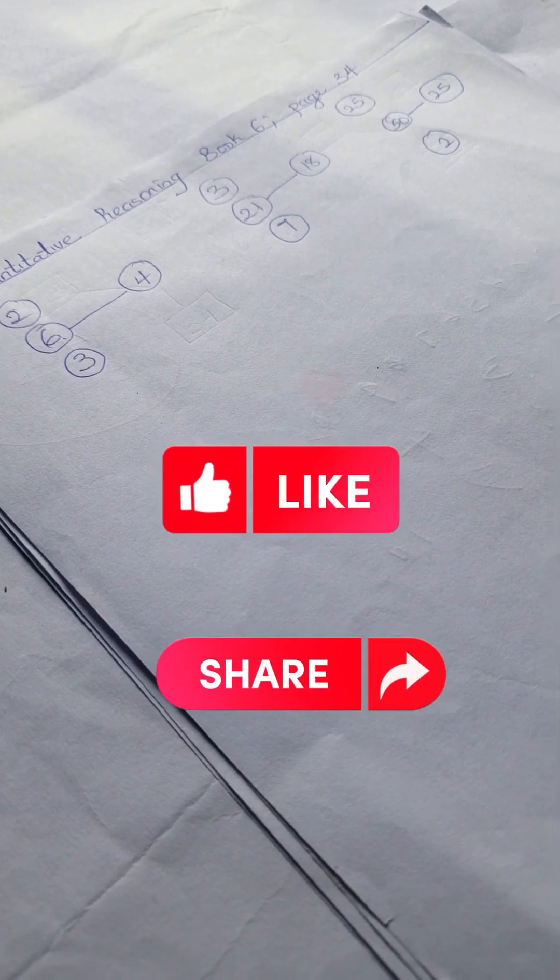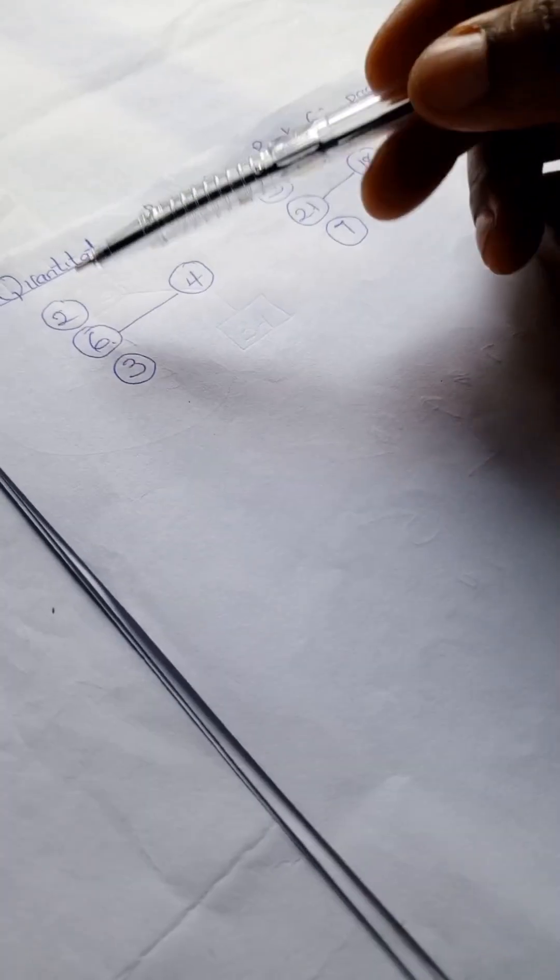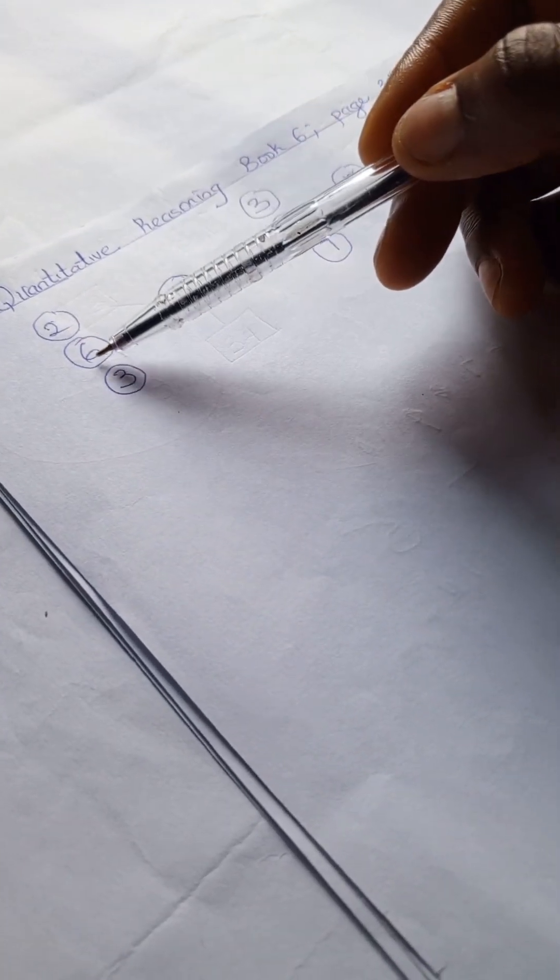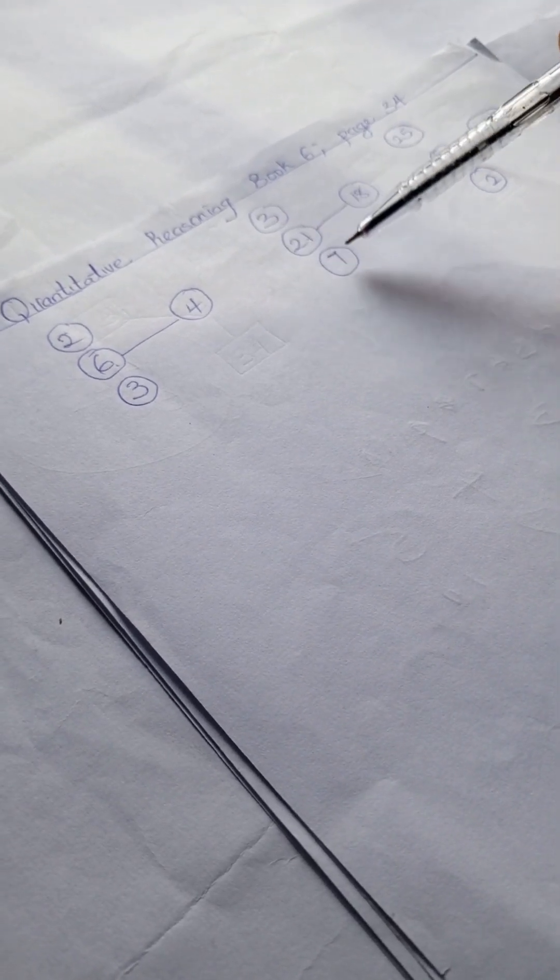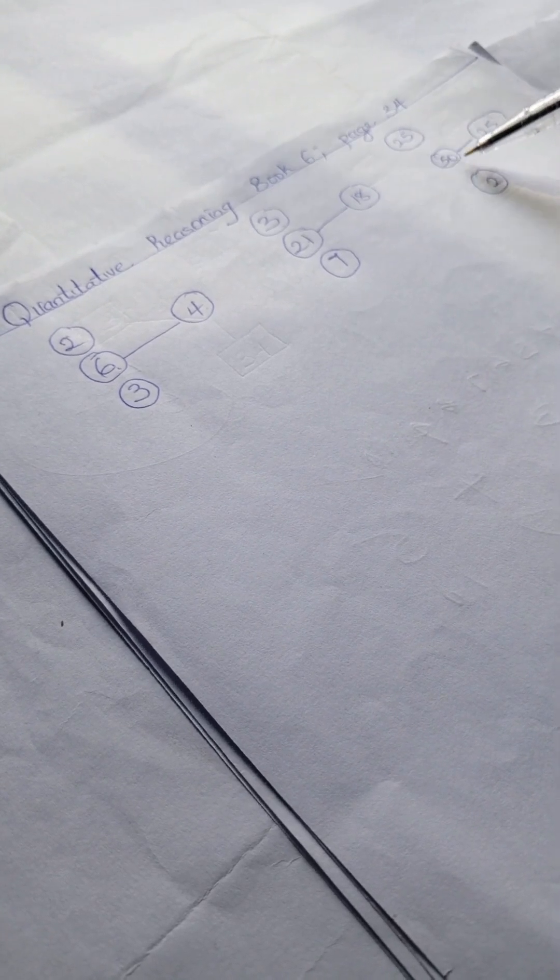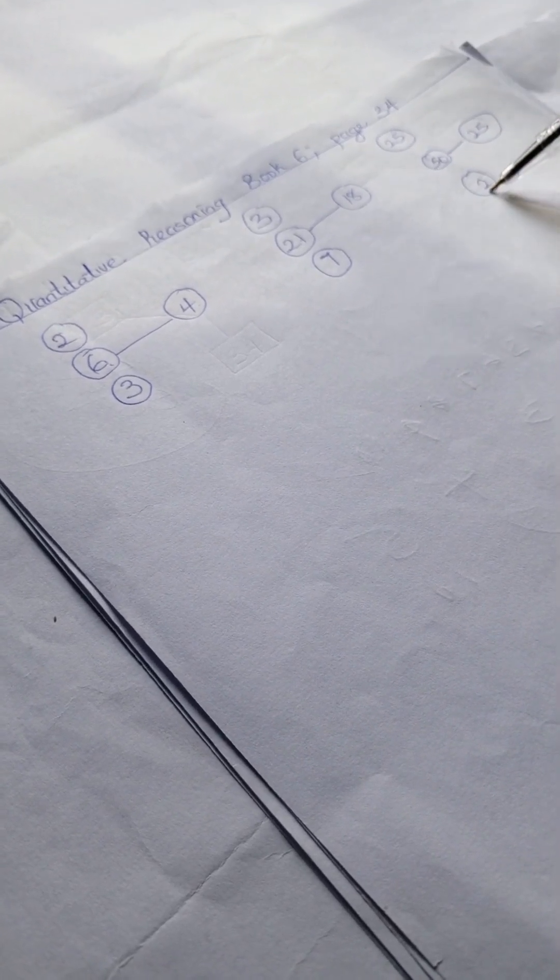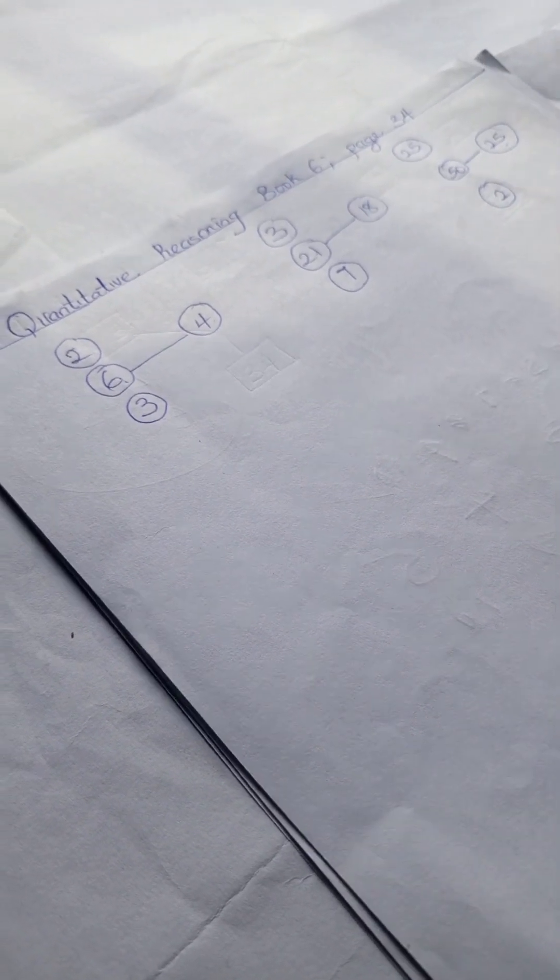We have this problem: we have 2, 6, 3, 4. Here we have 3, 21, 7, 18. Here we have 25, 52, and 25. So we're going to solve this.